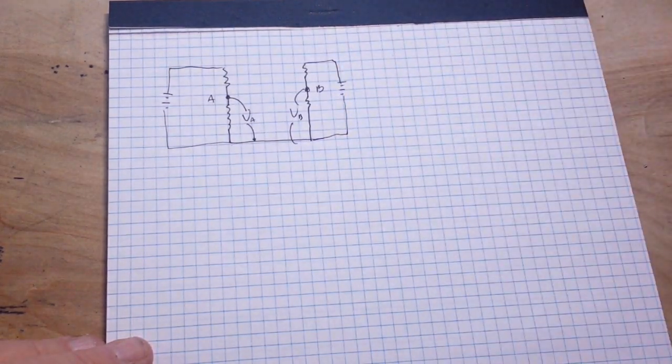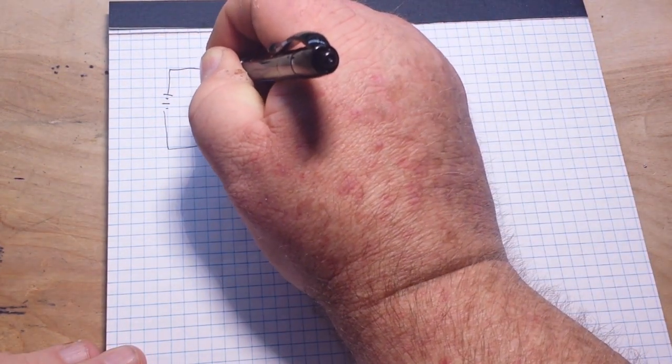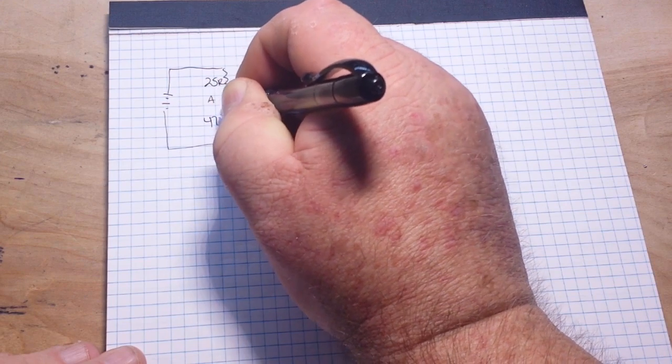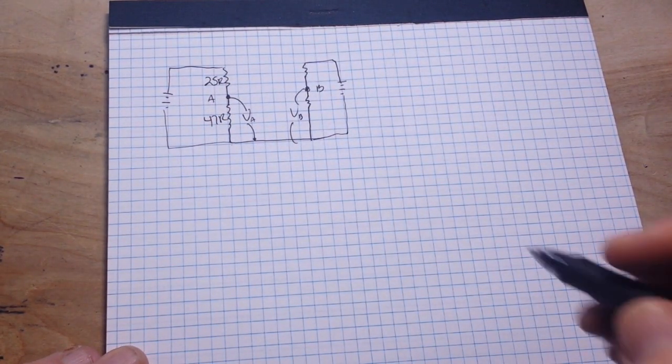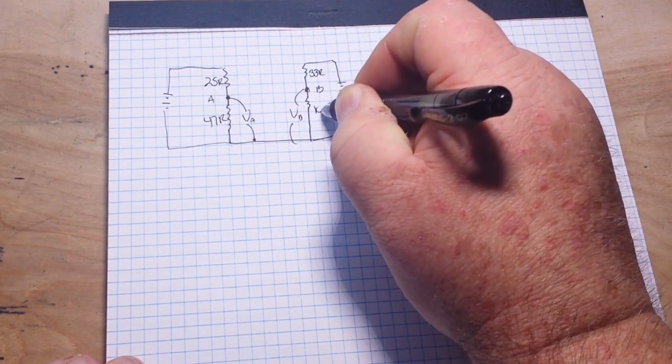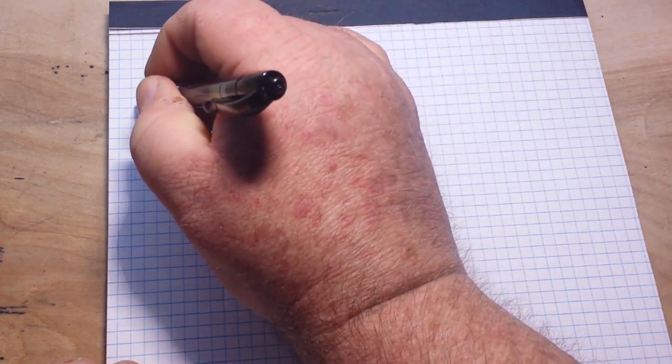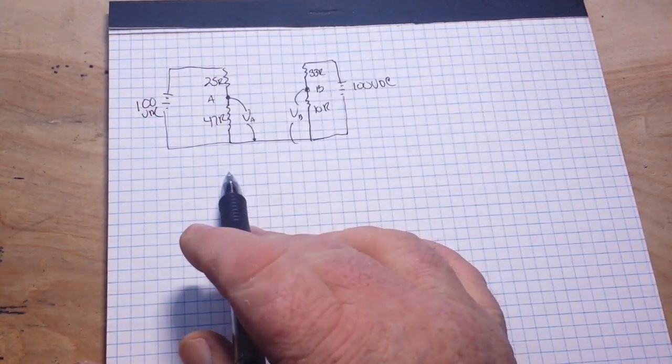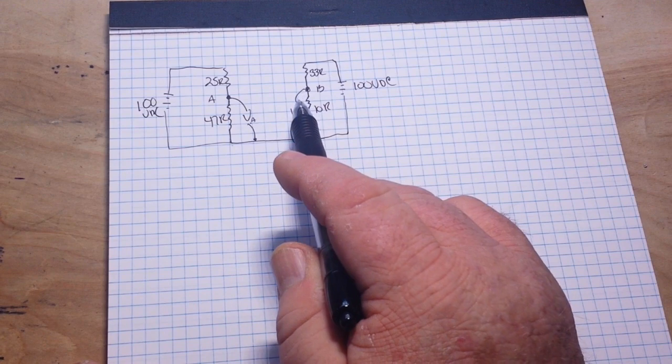So, in order to do that, you need to know some values. So, let's go with 25R and 47R and 33R and 10R and 100VDC here, 100VDC here. So, what is the voltage at A and B?